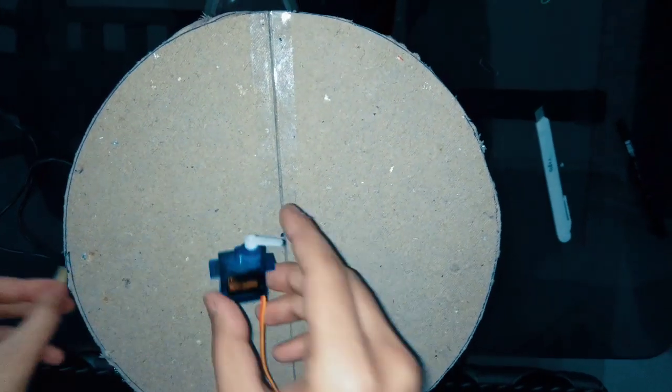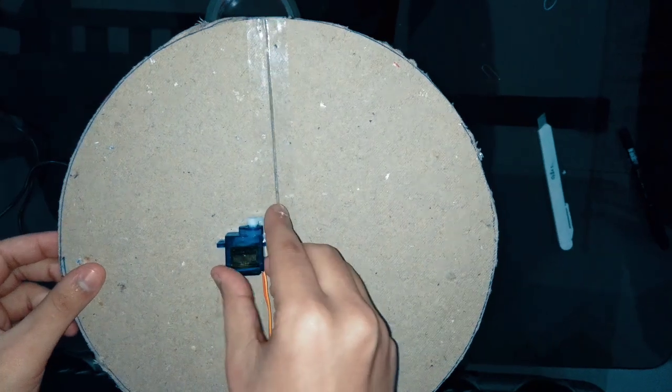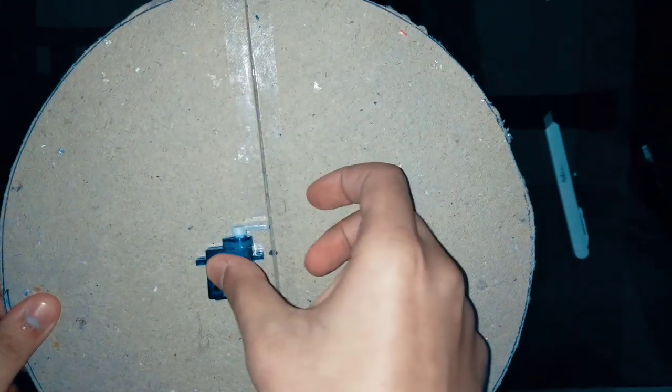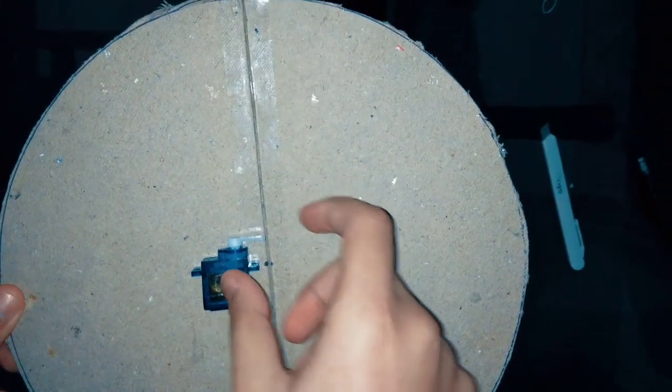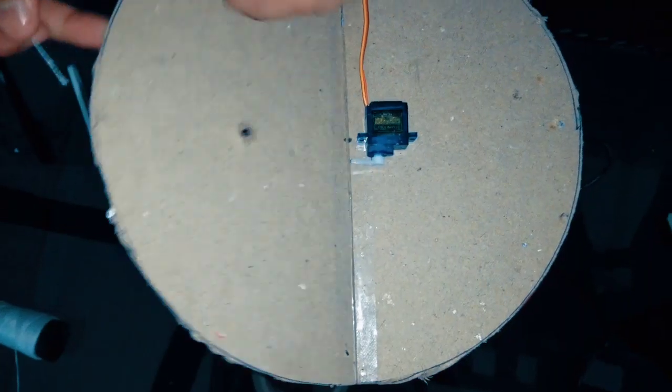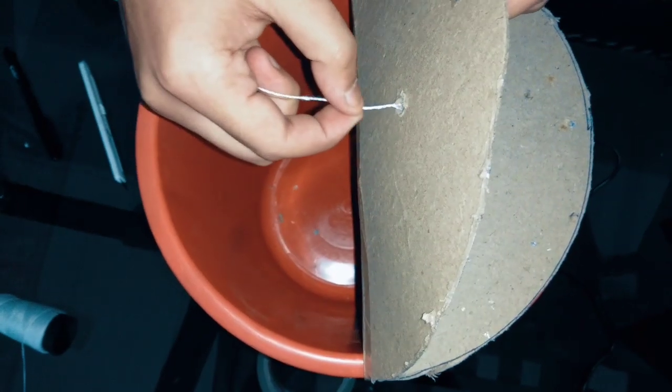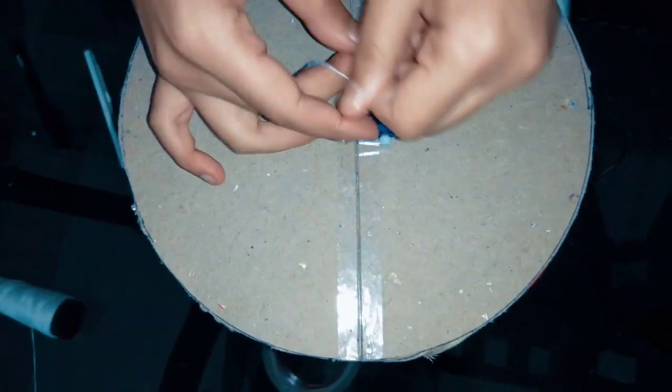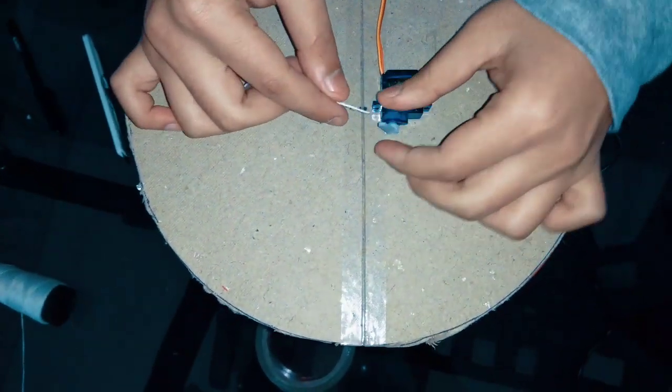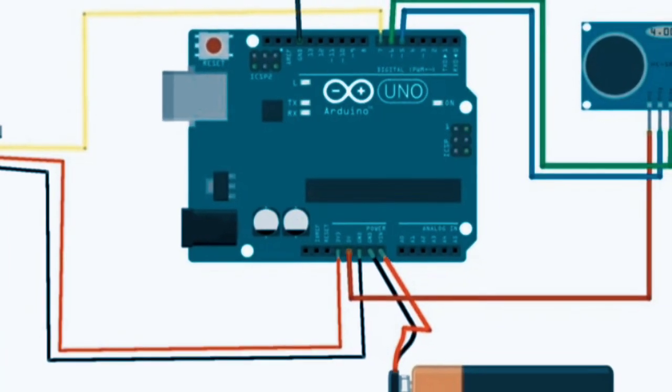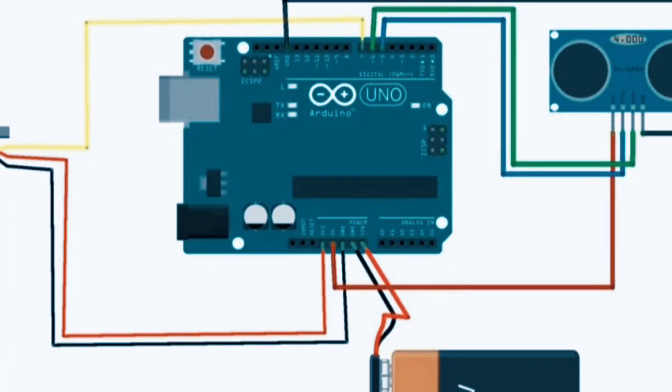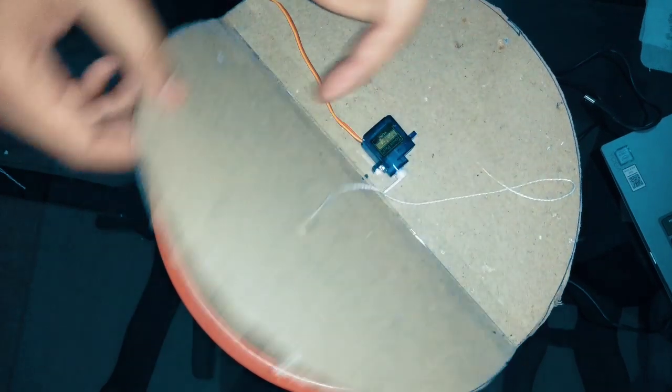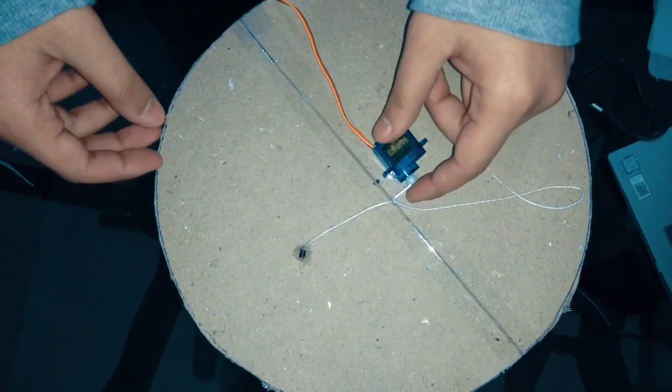Place the servo motor on top of the dustbin. Take a hole and pass the thread from it, then make another hole and pass the thread through the servo motor.